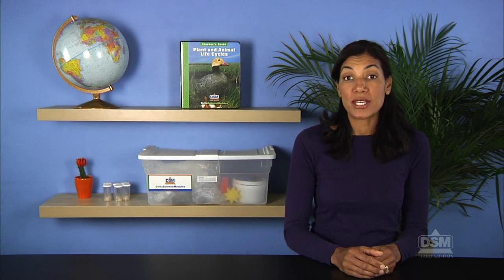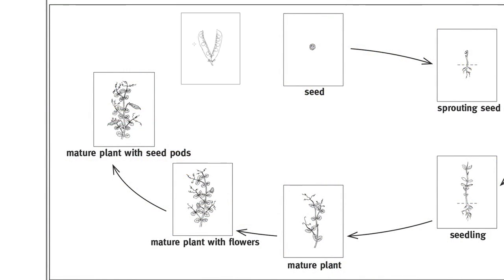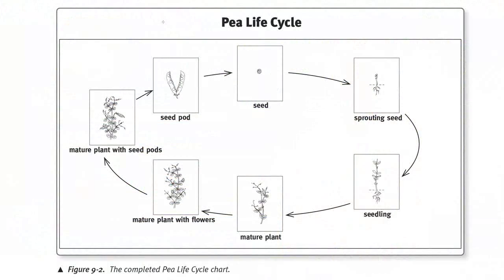Next, show students the picture of the opened seed pod and invite another volunteer to put the picture on the chart and tape it in place. Label it seed pod and draw arrows from the plant with seed pods to the seed pod, and then from the seed pod to the seed, forming a circle. Point out that the arrows on the chart form a circle and the whole cycle now shows the life of a pea plant.